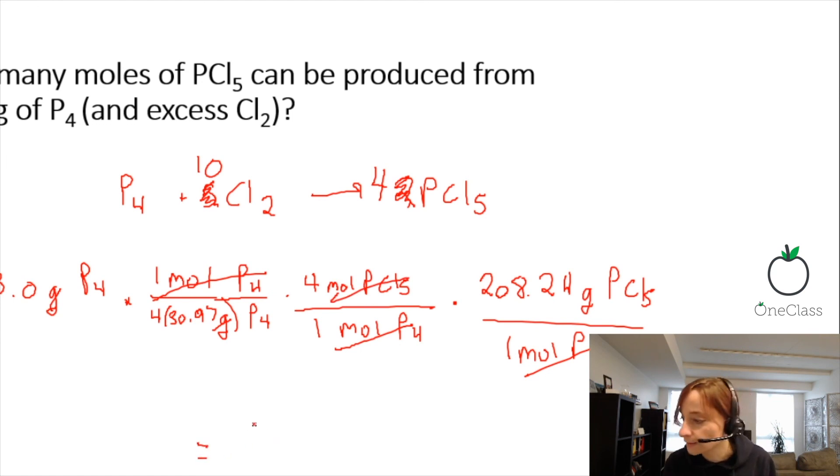And then the final answer is 154.65 grams PCl5 comes from when you react 23 grams of P4 with excess Cl2.